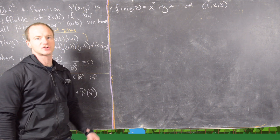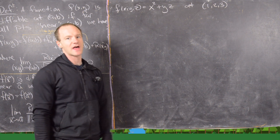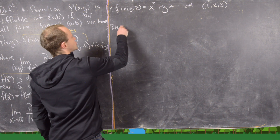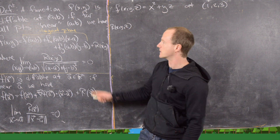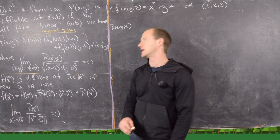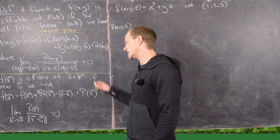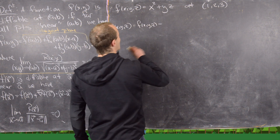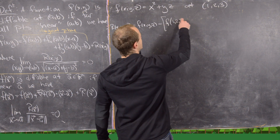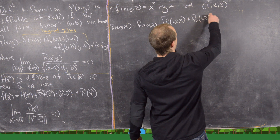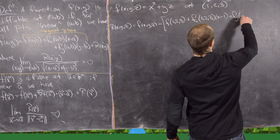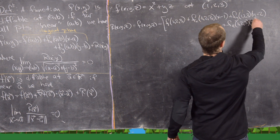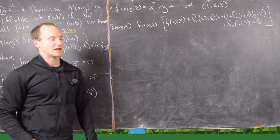For our next example, we focus on f(x,y,z) = x² + yz, and we'll show it's differentiable at the point (1,2,3). The remainder function is the original function minus the tangent plane: r = f(x,y,z) minus the quantity f(1,2,3) plus f_x(1,2,3)·(x minus 1) plus f_y(1,2,3)·(y minus 2) plus f_z(1,2,3)·(z minus 3). The partial derivatives are f_x = 2x, f_y = z, f_z = y, and f(1,2,3) = 1 + 6 = 7.